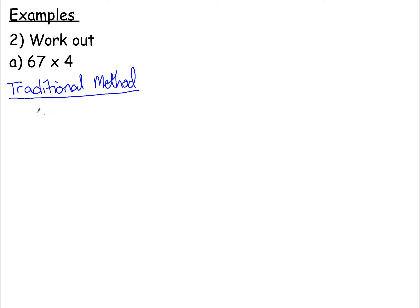Same as with adding and subtracting, we think about our place value chart. We put the 7 and 6 there, 4 goes underneath, and we times these like so. So we start by multiplying the units. 7 times 4 is 28 — put the 8 there, carry the 2. Then we multiply the tens by 4. 6 times 4 is 24, add your 2, it's going to give you 26. So we put the 6 there and the 2 there.